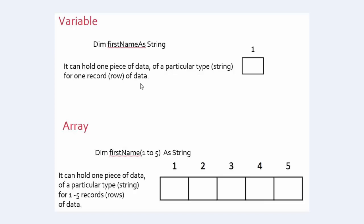With arrays, they function much the same way variables do. We declare them, give them a name, but arrays have parentheses, and in those parentheses we can tell how big the array needs to be and declare it as a particular data type. Now we have five positions for first name. So in each loop through our data, we can stick each row's value into a separate position. We only have to declare it once and it creates multiple positions.